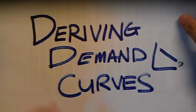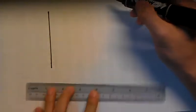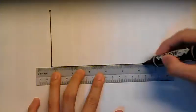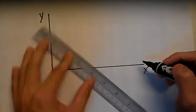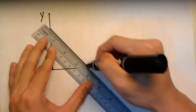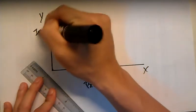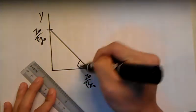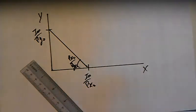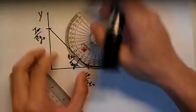How to derive the demand curve. First step, we're going to draw the budget constraints and the indifference curve. You should be familiar with this. X, Y axes. Budget constraint: I_0 over P_X0, I_0 over P_Y0, and P_X0 over P_Y0.